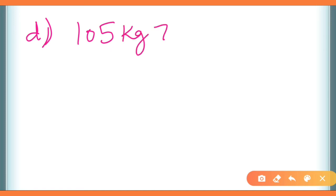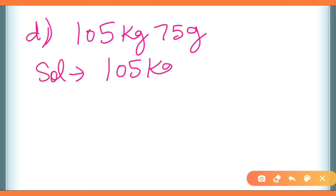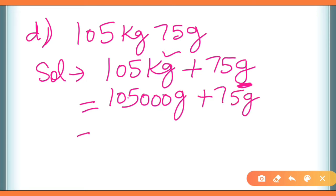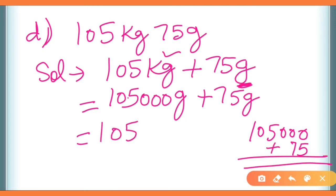One more example: 105 kilograms and 75 grams। Solution में: 105 kilograms plus 75 grams। 105 kilogram को grams में बदलना है — put three zeros: 105,000 grams। Plus 75 grams। 75 को last की two places के नीचे align करके add करें। Answer: 1,05,075 grams। In this way you will complete question number 2 of worksheet number 1 of unit 6.